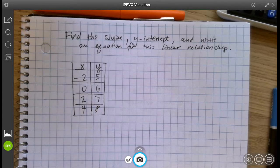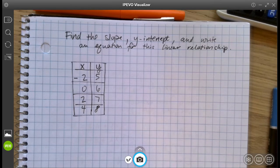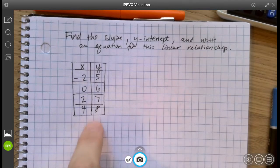Hi, I just wanted to give you guys a quick reminder for how to find the slope, the y-intercept, and write an equation when you have a linear relationship in a table representation.